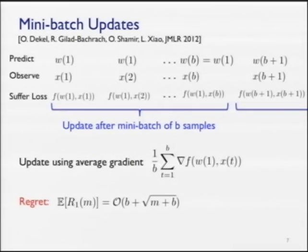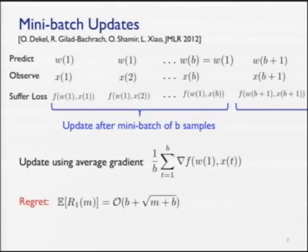In this setting, for arbitrary B you can show the regret scales like O(B + sqrt(M + B)). Choosing B to be at most order square root of M gives the same optimal scaling. This isn't interesting in the serial setting by itself, but it becomes interesting in the parallel setting: you can distribute the batching across processors in parallel, giving each processor 1/N of the batch — though this requires communication to compute the average gradient.